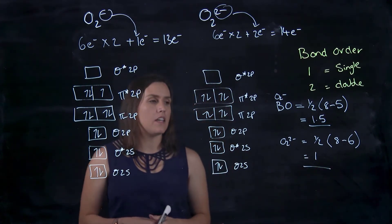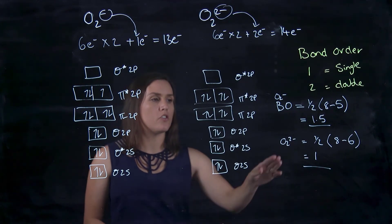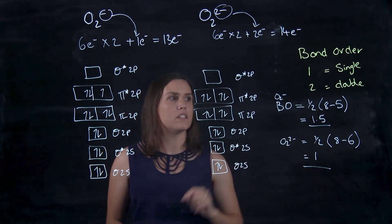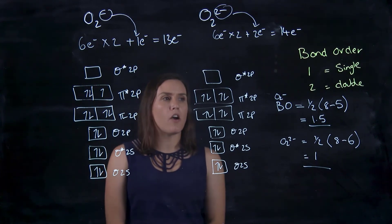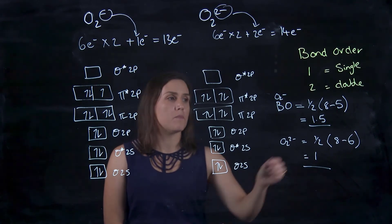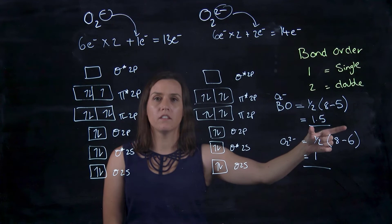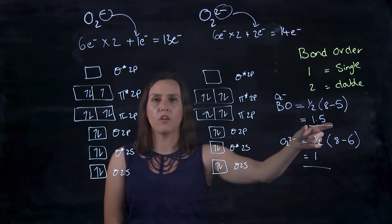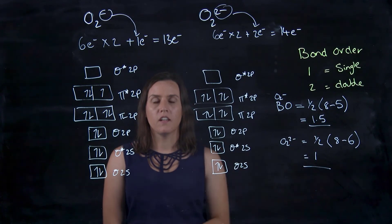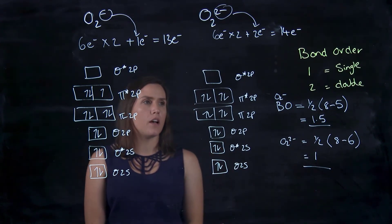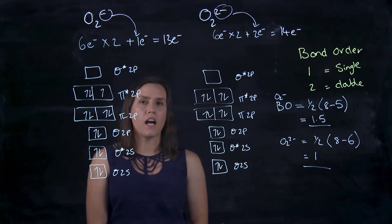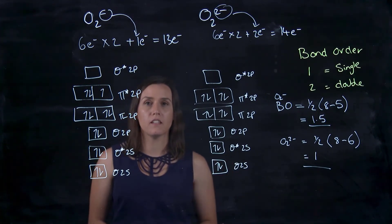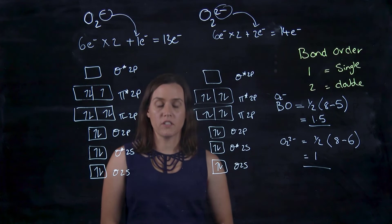So when we're looking at these, we know that this O2 2 minus has a single bond, because remember 1 is for single bond, and my O2 minus is a bit longer. It's not a single bond, it's not a double bond, it's a little bit longer, it's in between the two. So it's really useful theory and understanding the bond length between those two compounds and how they differ.